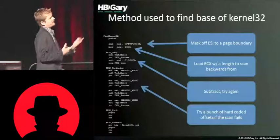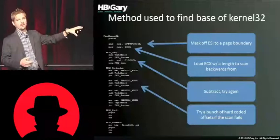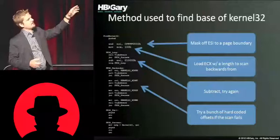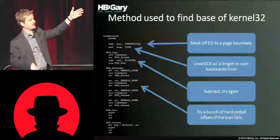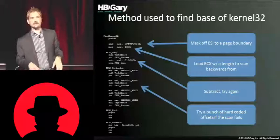Here's a way to find the base of kernel32. This is something very specific to the way a developer writes his code. He's going to first mask ESI to find a page boundary, then use ECX to control the length and do a backwards scan. He subtracts, and if he fails, he tries a whole bunch of hard-coded offsets like a Hail Mary, and if he can't get any of those, he fails out. That's a pretty good fingerprint for this developer.